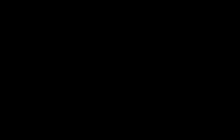The next property, extensibility, refers to the ability of all muscle cells to stretch beyond their normal resting length. Muscle cells can stretch, and that will become very important when you discuss the cardiovascular system in physiology — specifically cardiac muscle tissue and its ability to stretch, which causes a phenomenon called preload. So all muscle cells can stretch.